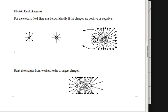On the second question, we're not identifying positive or negative — instead, you're ranking the charges from weakest to strongest. Between G, H, and I, you'll write the one with the smallest amount of charge first, followed by the middle one, and then the strongest charge.